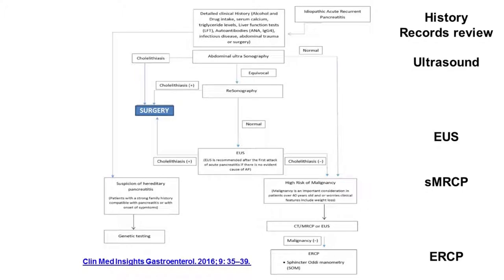Here is a working algorithm. A good history is very important — go through the records, make sure you're really dealing with acute pancreatitis, make sure the lipase is up three times the upper limit of normal, and make sure this is not someone who had post-ERCP pancreatitis and never had real pancreatitis. An ultrasound is the cornerstone of what you should do first. You can repeat the ultrasound — if you see biliary sludge in a person with recurrent acute pancreatitis, take the gallbladder out.